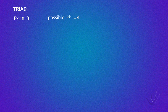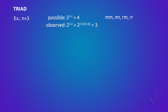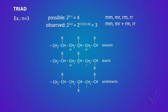In a triad sequence, the possible stereosequences are 4: MM, MR, RM and RR, but the observed are 3. This is because the stereosequences MR and RM are not distinguishable by NMR — they appear at the same chemical shift, but the integral is double that of the MM or RR sequences.